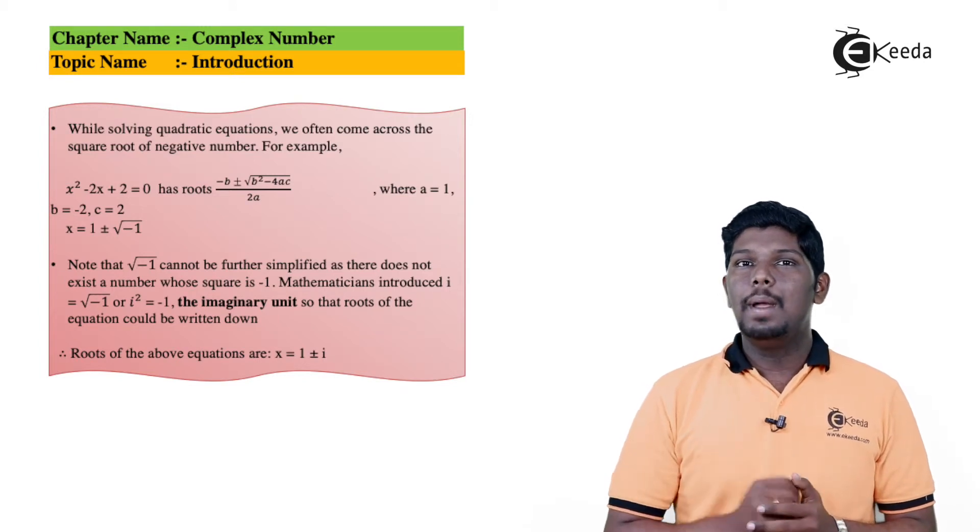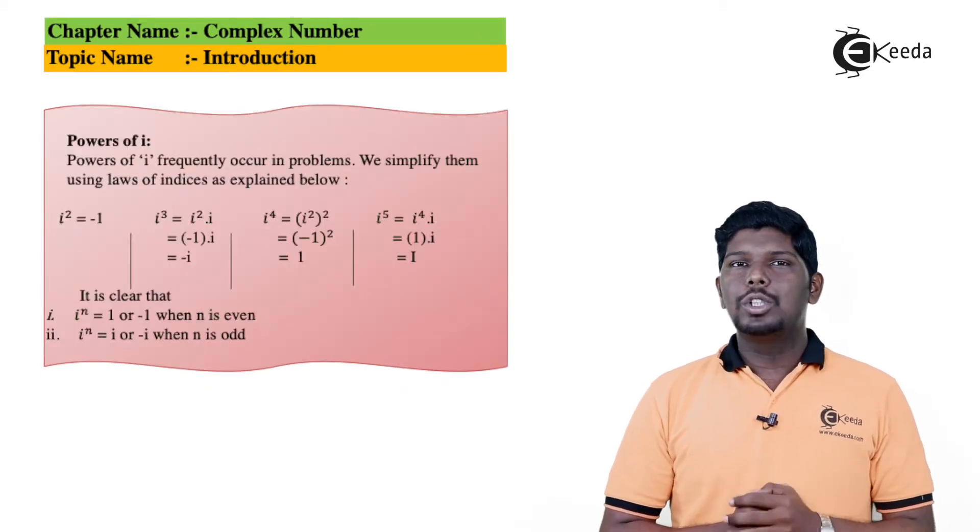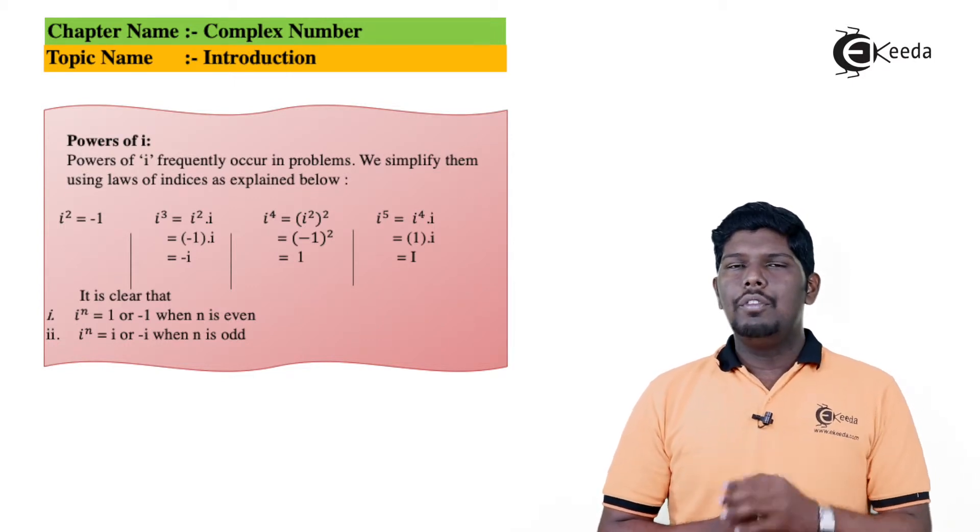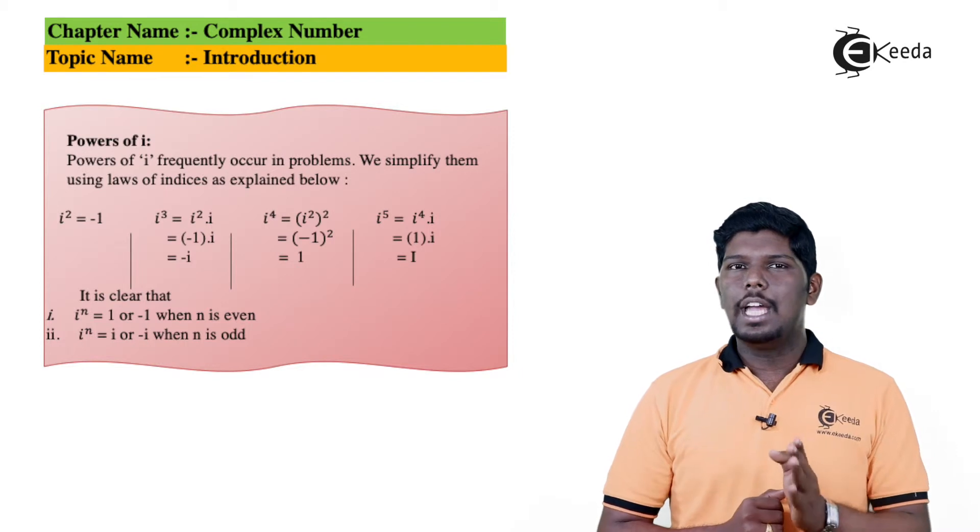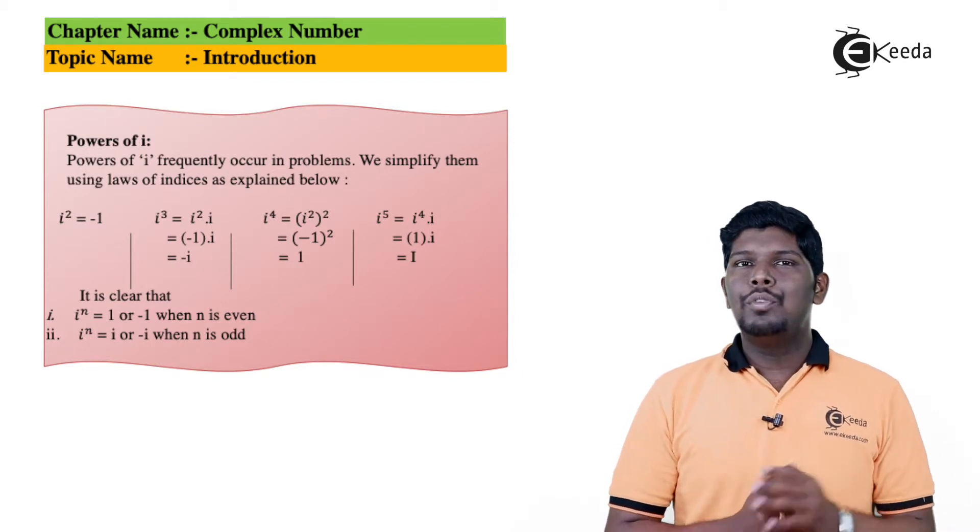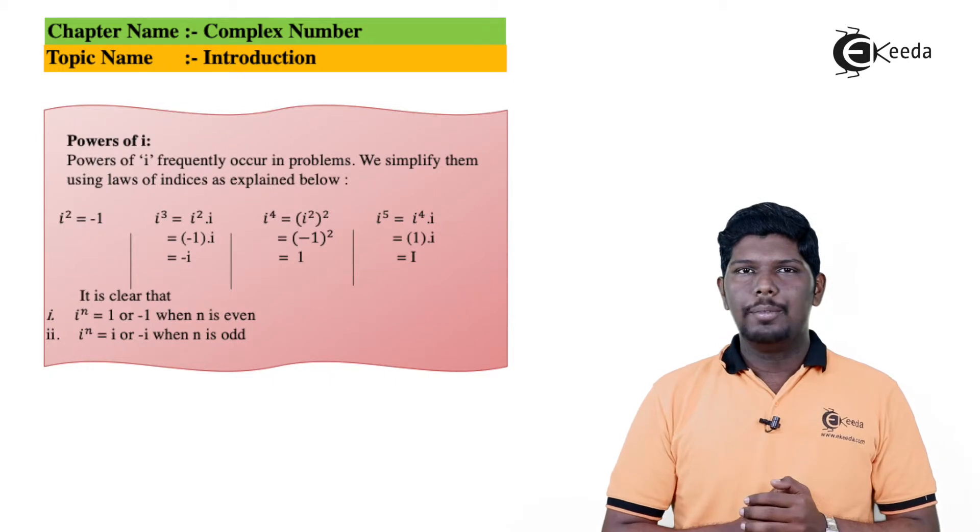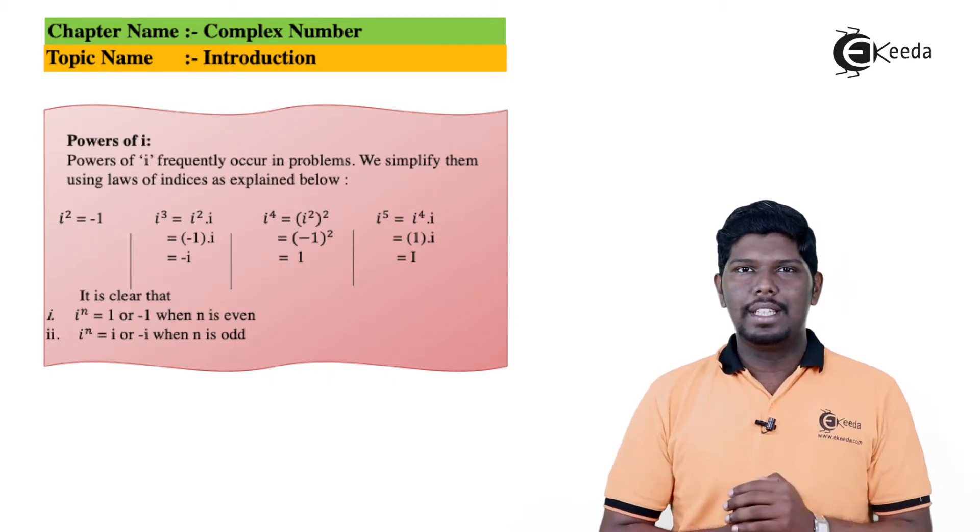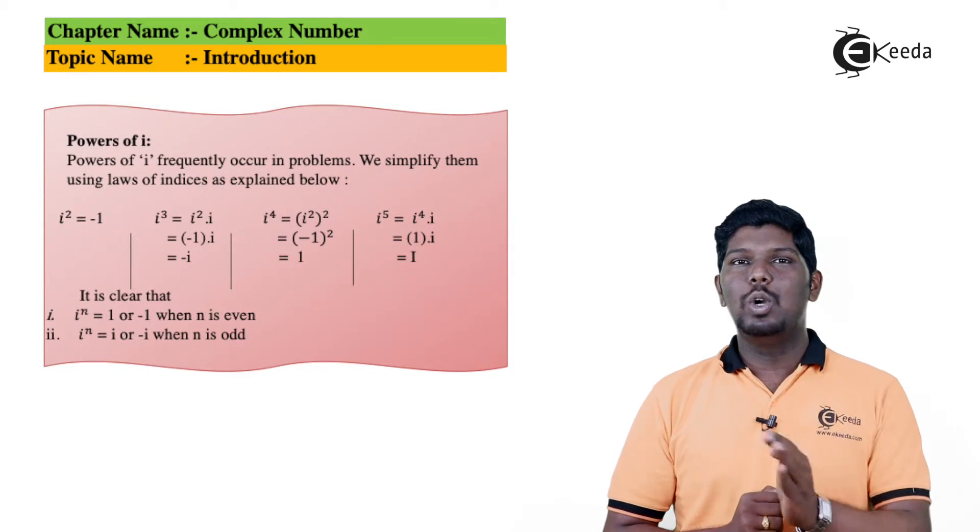Now let us see the different powers of i that we'll use in this chapter. We have already seen i² = -1. Now to find the value of i³, you can split it as i² × i. What is i²? It is -1, so -1 × i will give you -i. It means i³ = -i.